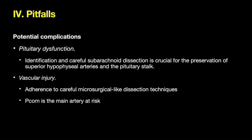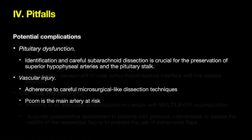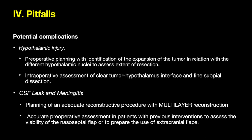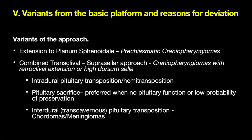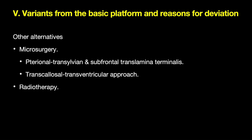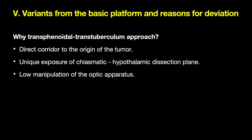Pitfalls include pituitary dysfunction, vascular injury, hypothalamic injury, and CSF leak/meningitis. Variants of the approach include extension into the planum sphenoidale anteriorly or combination with a transclival approach by performing a pituitary transposition or pituitary sacrifice when indicated. Alternatives include transcranial microscopic approaches and radiotherapy. The transsphenoidal approach is favored because it provides a direct corridor to the tumor, a unique exposure of the infrachiasmatic and retrochiasmatic territory, with direct visualization of the hypothalamic dissection plane.